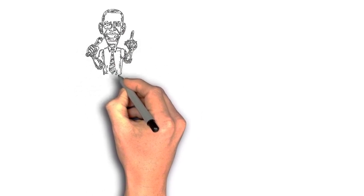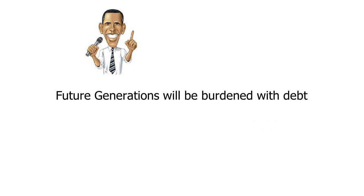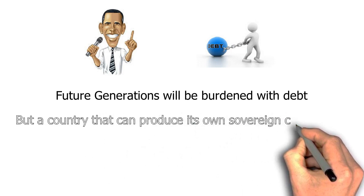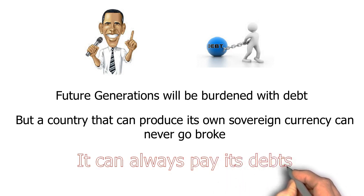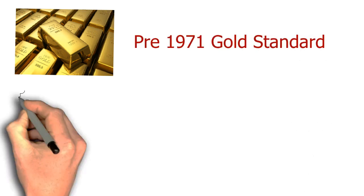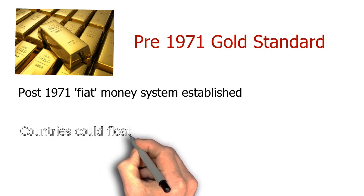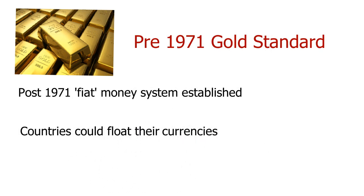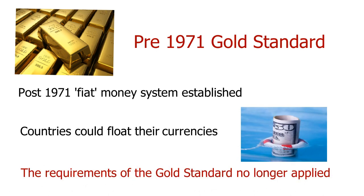Despite this obvious contradiction, most politicians and economic commentators fear that if the government deficit grows too large, future generations will be burdened with a debt that can never be repaid. This attitude fails to recognise, however, that the government can never go broke. As the issuer of its own currency, the government can always pay its debts. This was not the case prior to 1971 when countries were on the gold standard and the value of money was backed by gold. However, following the adoption of the fiat money system, when countries were able to float their own currencies, the requirements of the gold standard no longer applied.